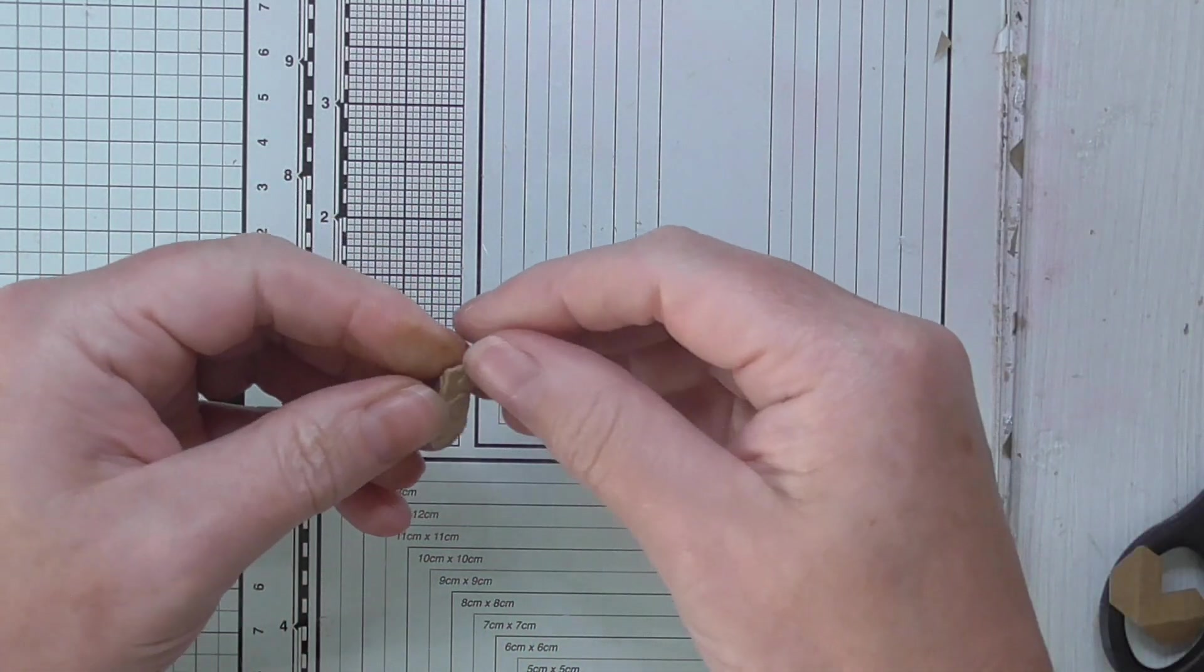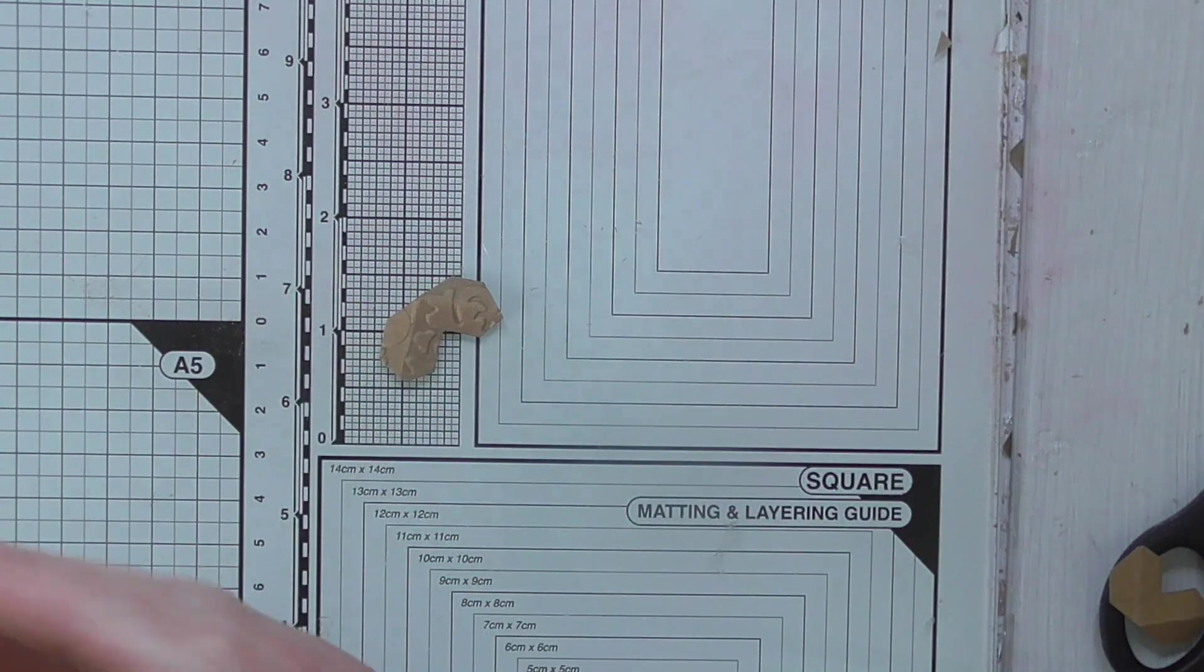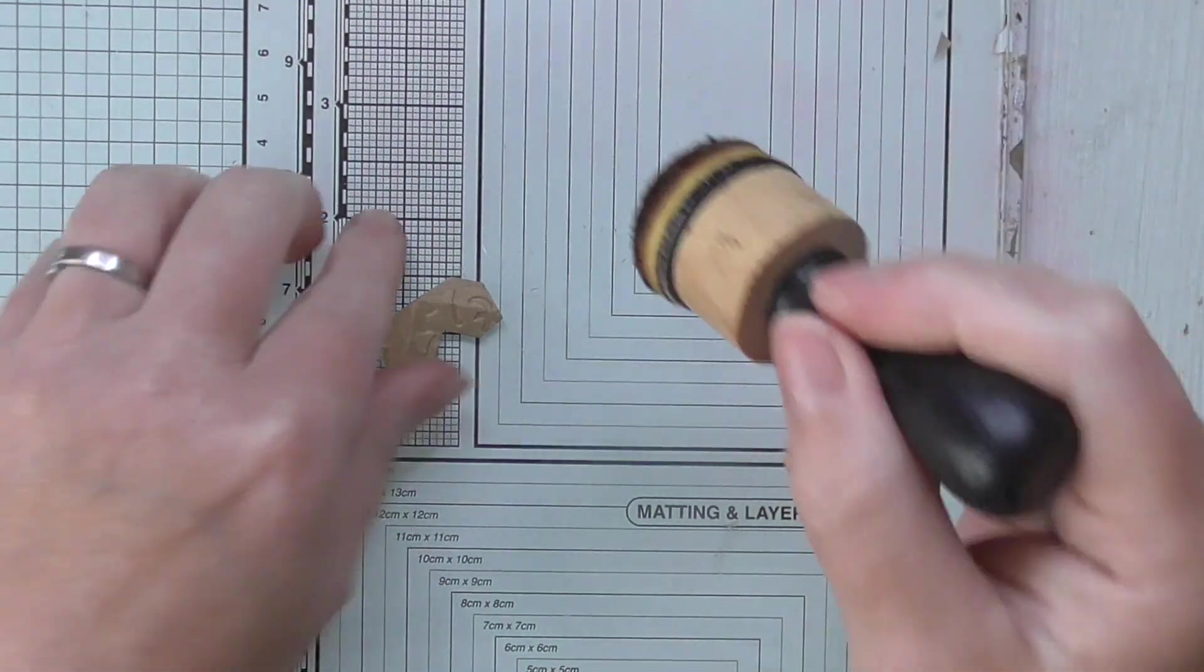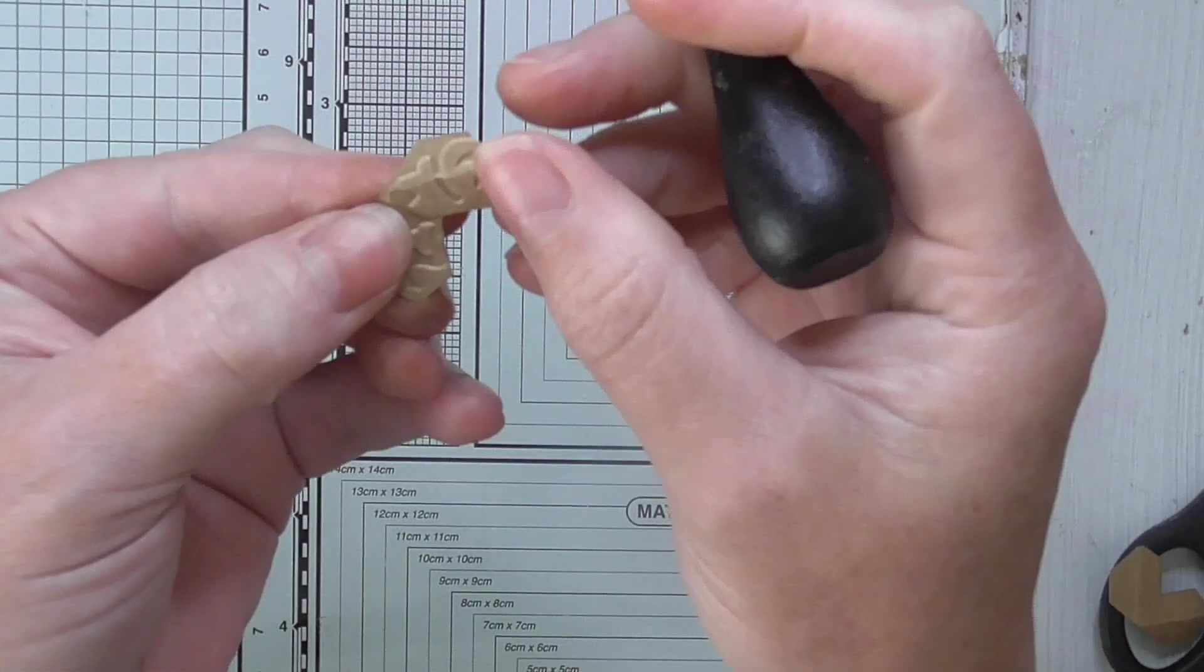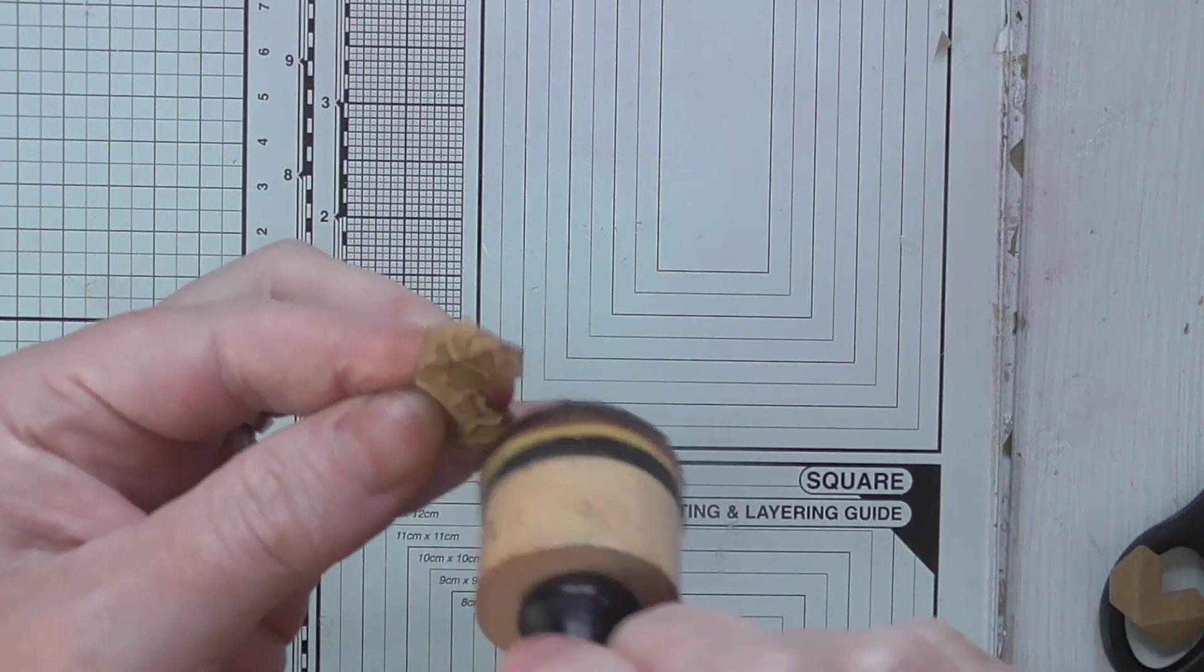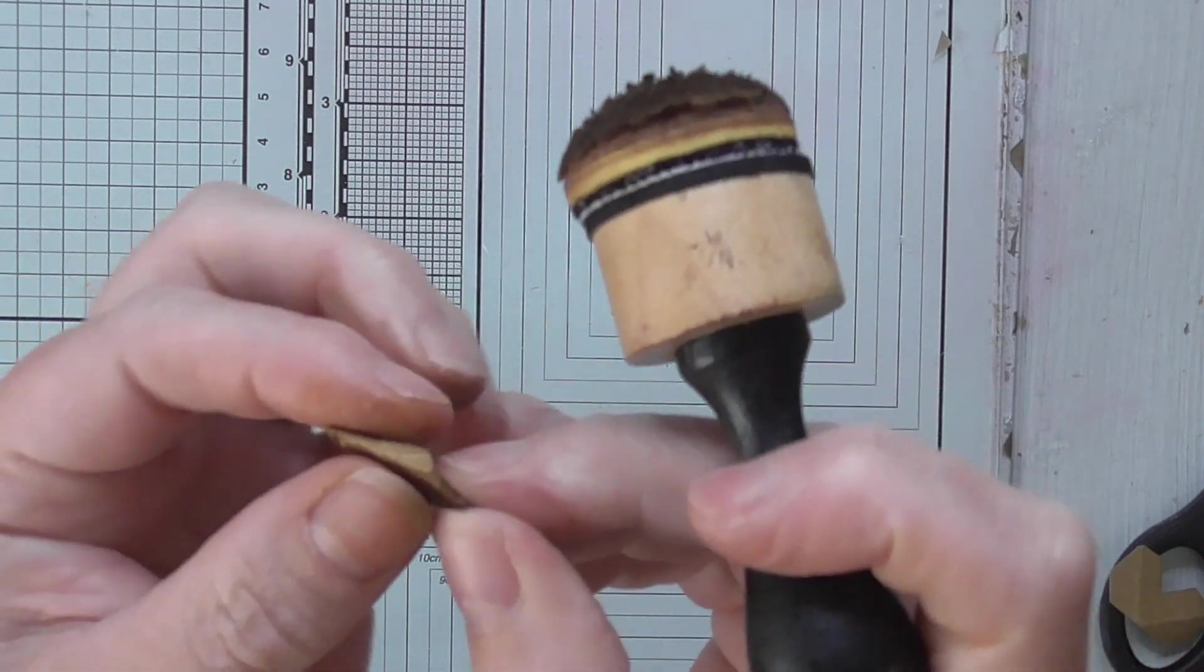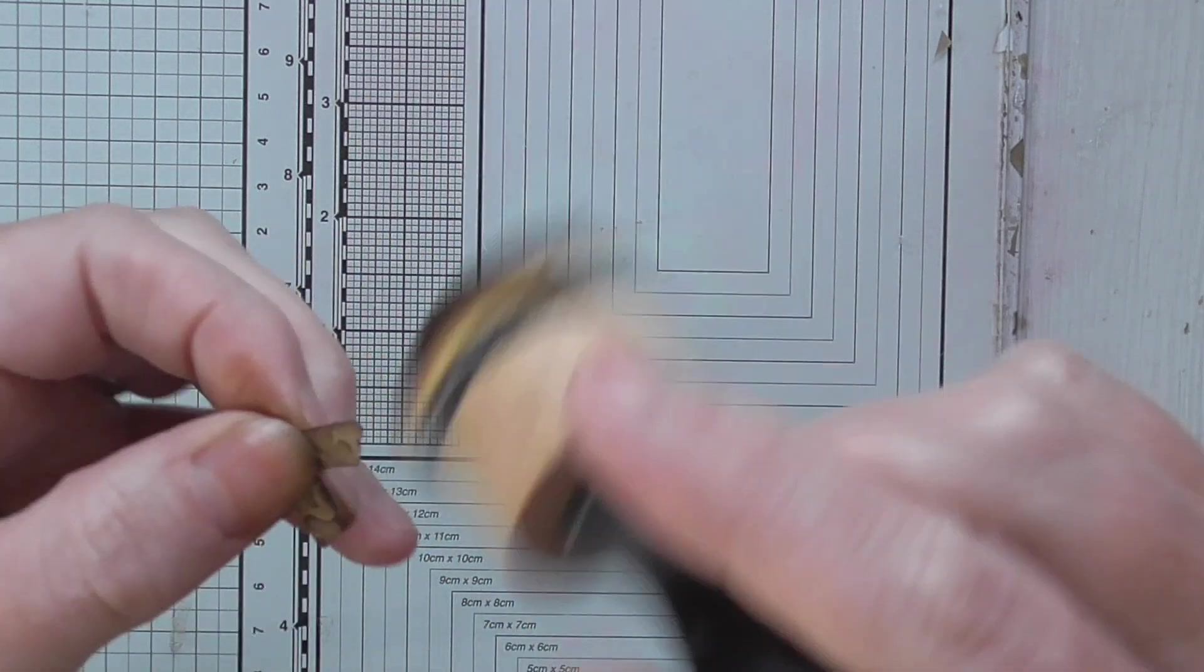Then what you're going to do is fold it back out just to make your life a bit easier. Go in with some kind of distress ink. I'm going to use walnut stain just because it's darker and it'll show up nicer. And very gently go over the top of the embossing. Then fold it up. Remember not to squeeze too hard. You don't want to flatten out the pattern that you've made.